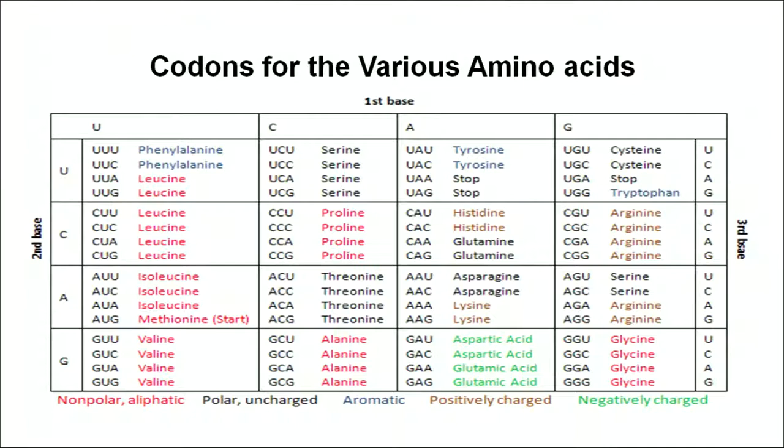The genetic code is degenerate, meaning we have 64 codons but the total number of amino acids which make up proteins is only 20. So we have far more codons than amino acids, and for one particular amino acid more than one codon is available. For example, UUA, UUG, CUU, CUC, CUA, and CUG all code for leucine - six codons coding for the same amino acid - clearly indicating that the genetic code is degenerate.